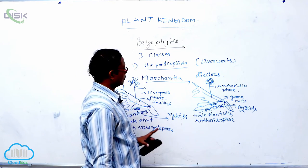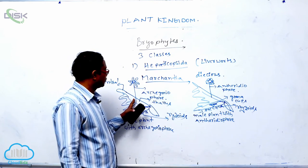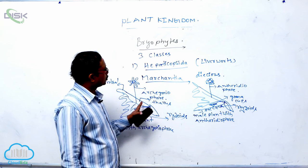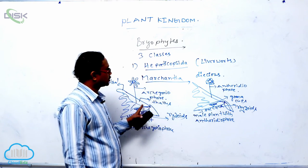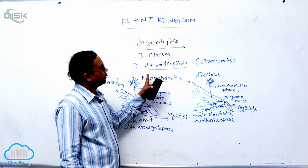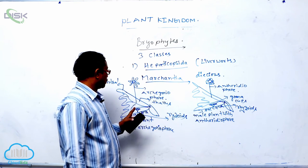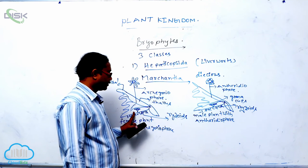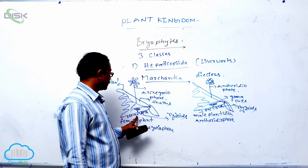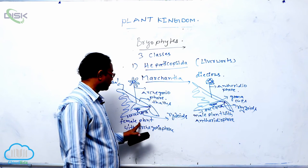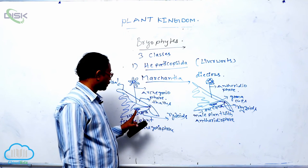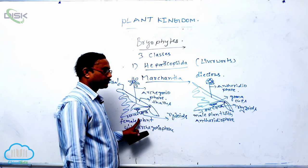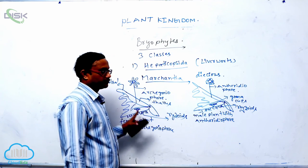Marchantia, it is a simple thallus-like structure. It is liver-like lobe. Plant body is liver-like lobe, that's why they are known as hepatic. Hepatic means liver-like lobe. It is generally dorsiventral differentiated. By the rhizoids, this Marchantia is connected to the substratum by unicellular rhizoids. It is dorsiventral differentiated. It is prostrate and thallus-like body.